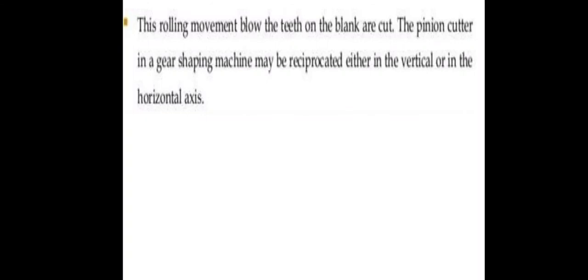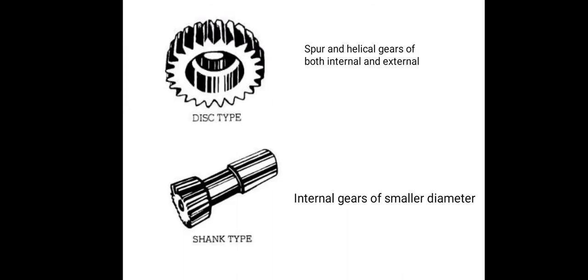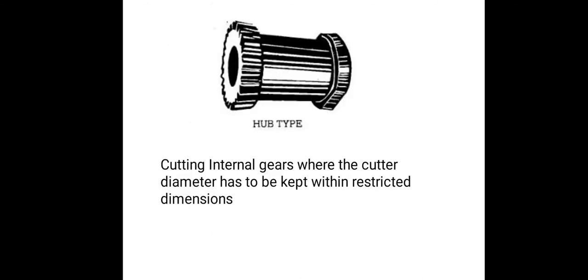The rolling movement cuts the teeth on the blank. The pinion cutter in a gear shaping machine may be reciprocated either vertically or horizontally. Types include disc type and shank type, used for both internal and external spur and helical gear cutting. Shank type cutters are used for smaller diameter internal gears, and hub type cutters are used where the cutter diameter must fit within a restricted dimension.